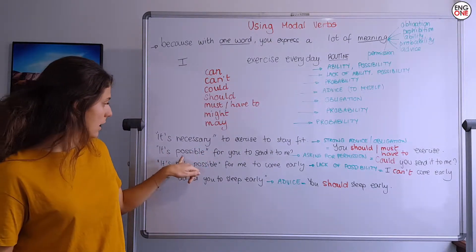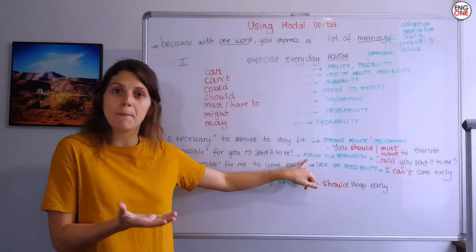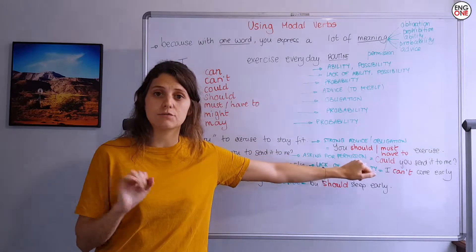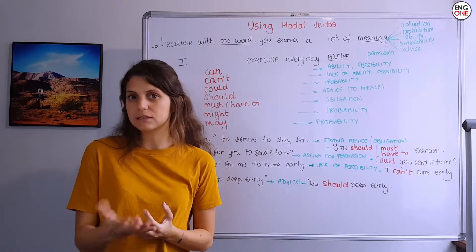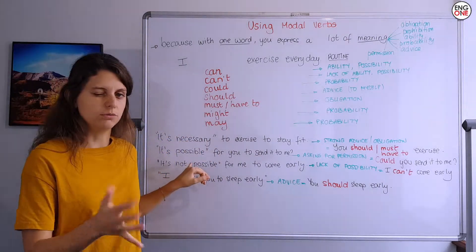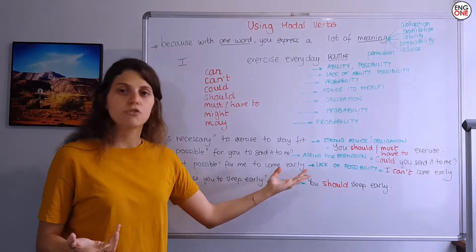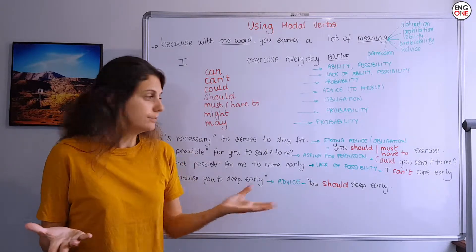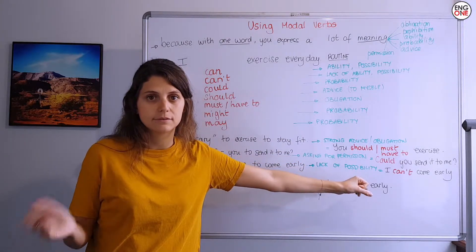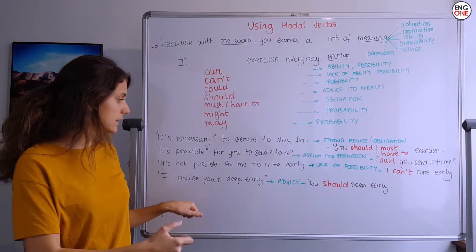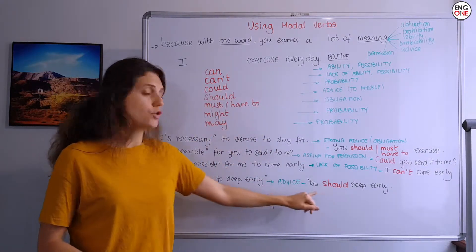Another one: 'Is it possible for you to send it to me?' — better to ask for permission using 'Could you send it to me?' or 'Can you send it to me?' But 'could' is a bit more polite. 'Could you send it to me?' instead of 'Is it possible for you?' 'It's not possible for me to come early' — this is a lack of possibility, so we use 'can't': 'I can't come early.' And finally, 'I advise you to sleep early' — for advice, use 'should': 'You should sleep early.'